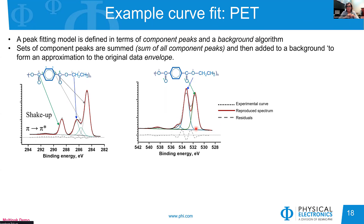Let's look at the graphene example — a very simple case where we know the structure, so we can easily set up our model. We have our experimental carbon 1s and oxygen 1s spectra (dashed line). The model consists of a background — which we always subtract — and component peaks. Individual peaks are added together to produce a reproduced spectrum (the red line). The difference between our experimental curve and the red line is the residual. When fitting, we are trying to minimize the residual.